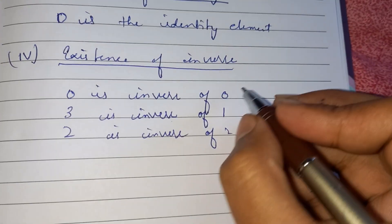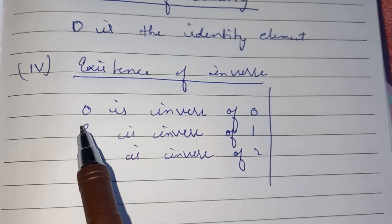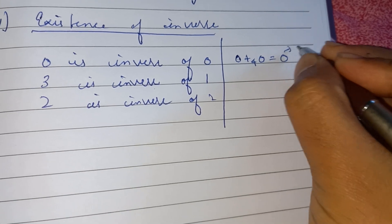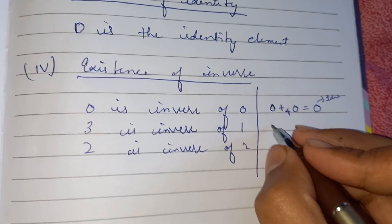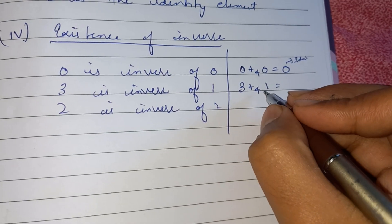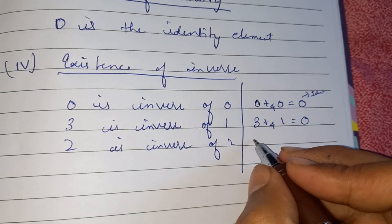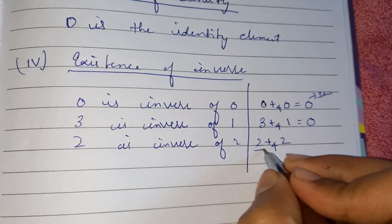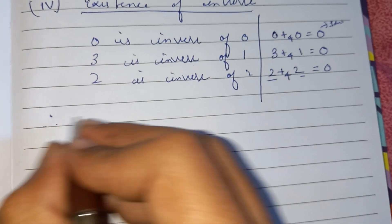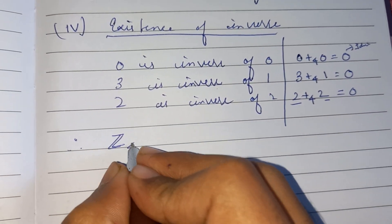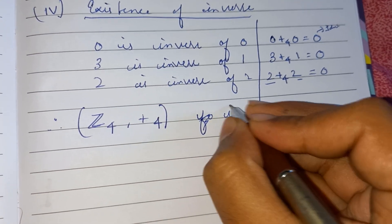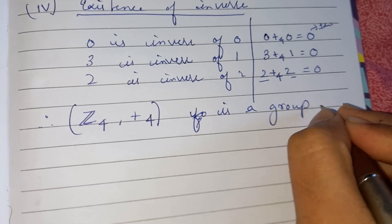Let's verify: 0 plus 0 equals 0, which is the identity element. Then 3 plus 1 equals 4, and dividing by 4 the remainder is 0. And 2 plus 2 equals 4, dividing by 4 gives remainder 0. Therefore Z4 with addition modulo 4 is a group. Thank you.